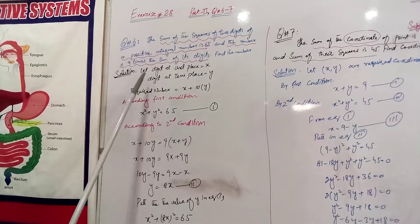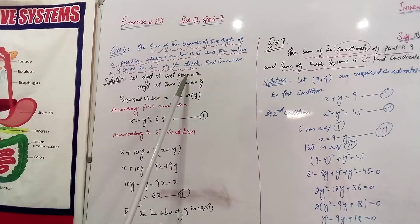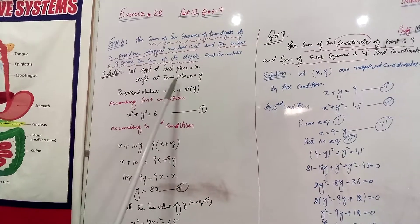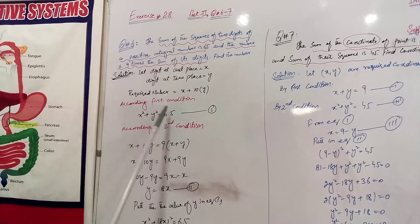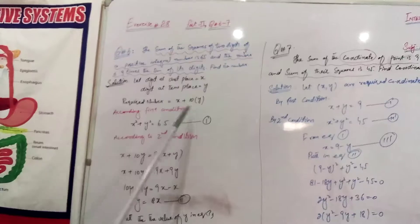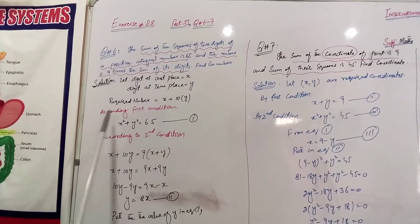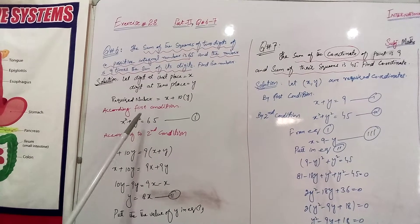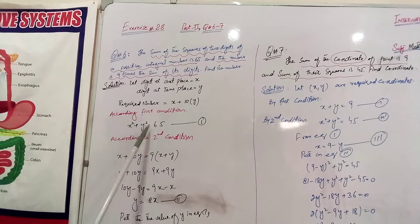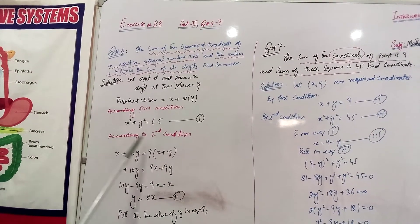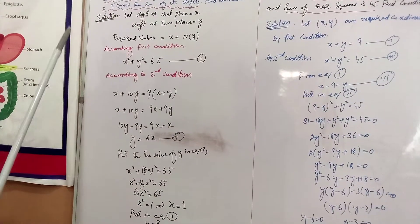We will let the digit at the unit place be x and the digit at the tens place be y. The required number formation is x plus 10y. According to the first condition, the sum of the squares of 2 digits is 65, so x squared plus y squared is equal to 65.